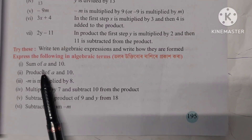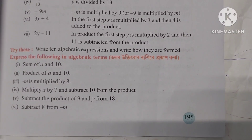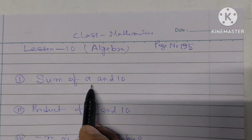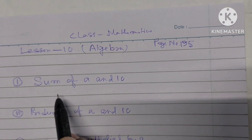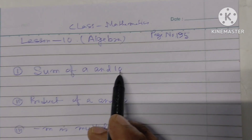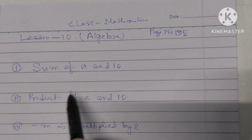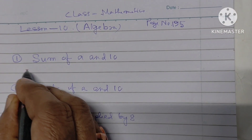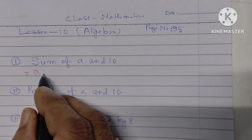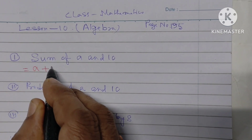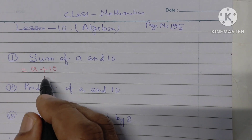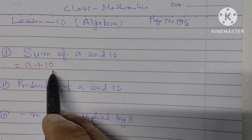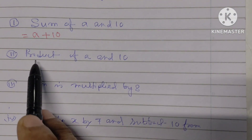Number one: sum of a and 10. Sum means plus, so sum of a and 10 means a plus 10.